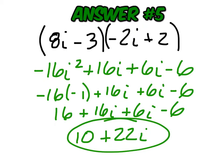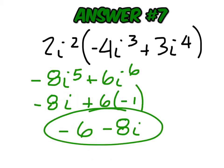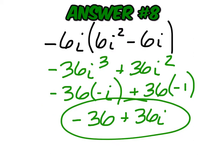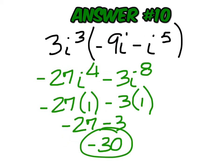Number 5 is 10 plus 22i. Number 6 is negative 23i. Number 7 is negative 6 minus 8i. Number 8 is negative 36 plus 36i. Number 9 is 0. Number 10 is negative 30.